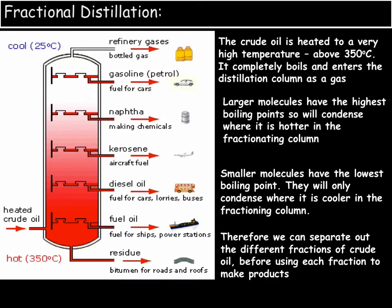Larger molecules have the highest boiling point, so they condense first where the column is much warmer. For example, the residue will condense very quickly and turn into a liquid. At each point, we can tap off the required fraction as it is turned from a gas into a liquid. Smaller molecules have a lower boiling point, so they only condense where it's cooler — much higher up. This allows us to separate out the different fractions of crude oil before using each fraction to make specific products.